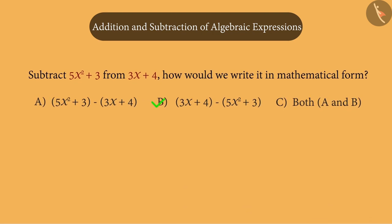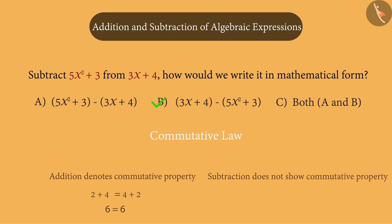We have read about the commutative property in the previous classes. Always remember that commutative property is true for addition. For example, 2 plus 4 and 4 plus 2 are the same. But subtraction does not show commutative property.